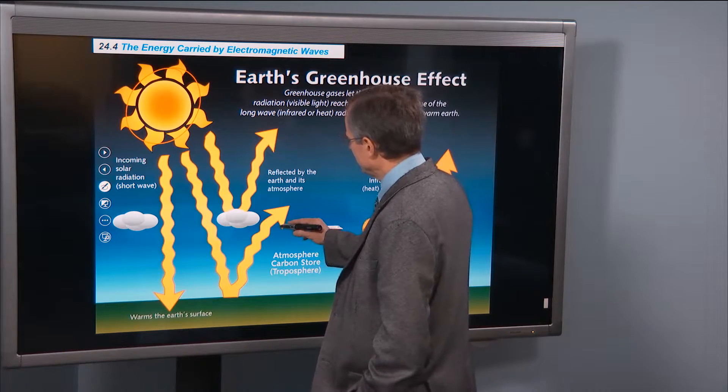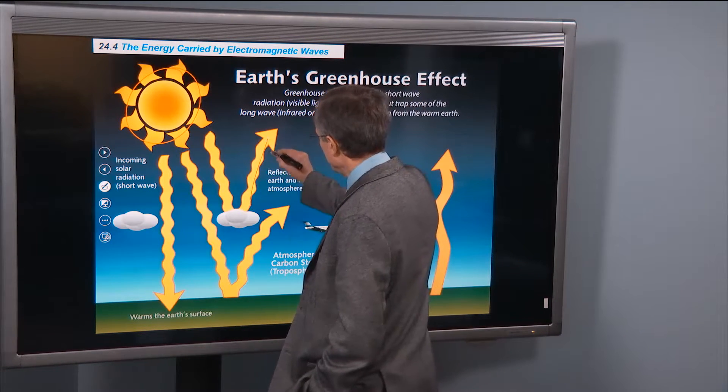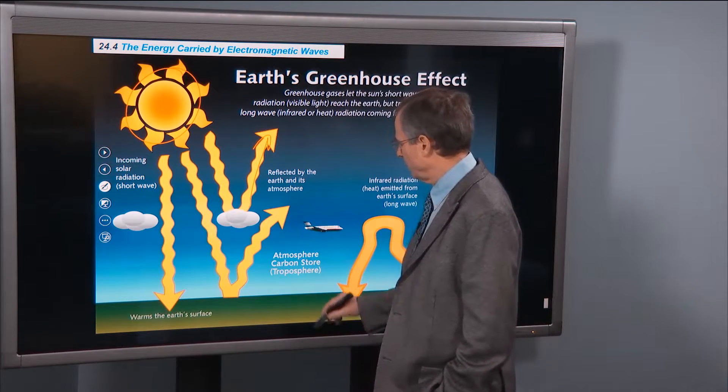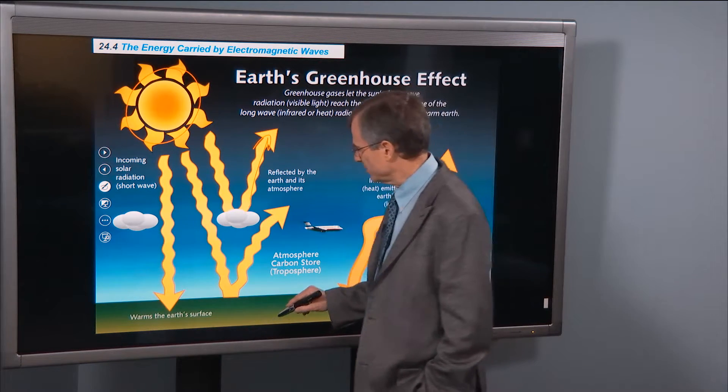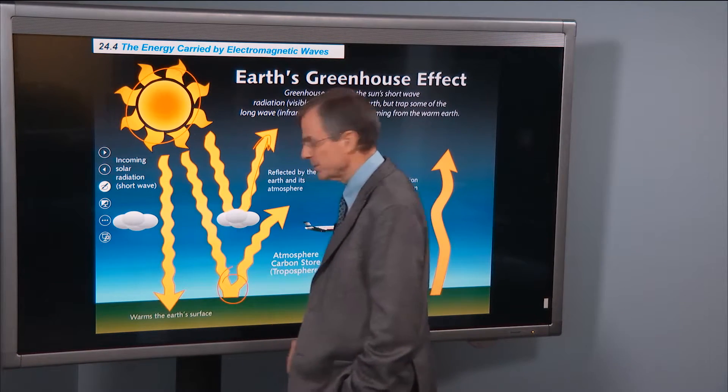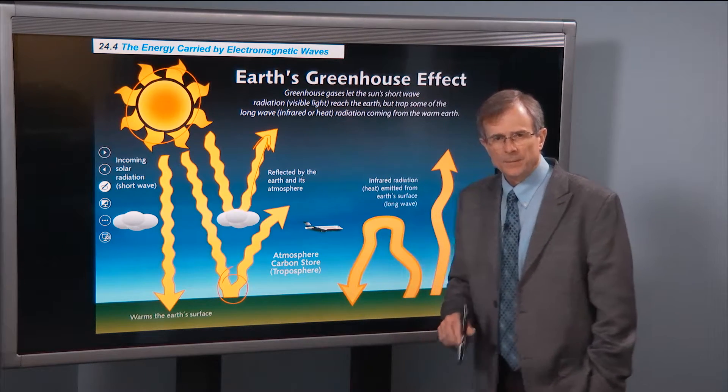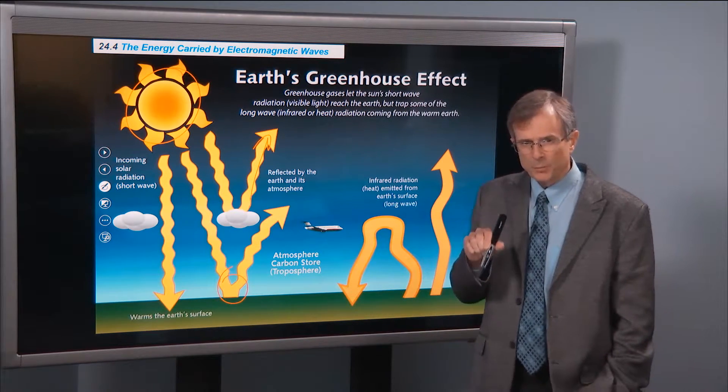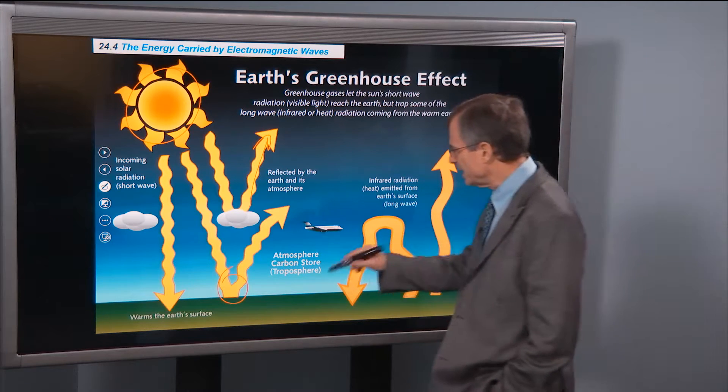Some of that radiation is reflected off the clouds. But the part that we're interested in thinking about the greenhouse effect is the part that actually makes it to the surface. The visible light that makes it to the surface, heats the surface,